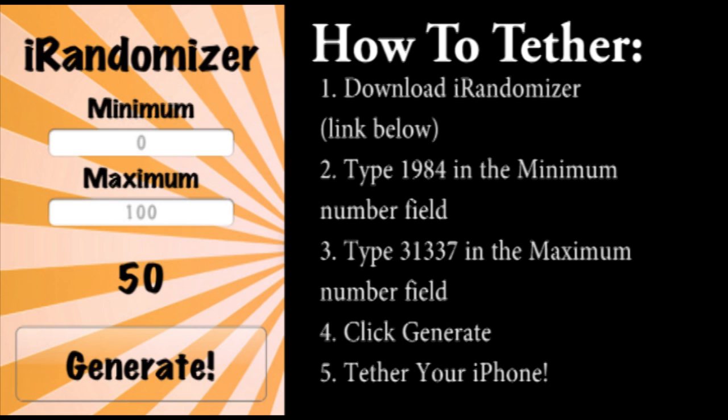But another app has just come out with a hidden Easter egg. It's called iRandomizer Numbers and it is available for $4.99. Right now we're going to be showing you guys how to actually be able to get this tethering.